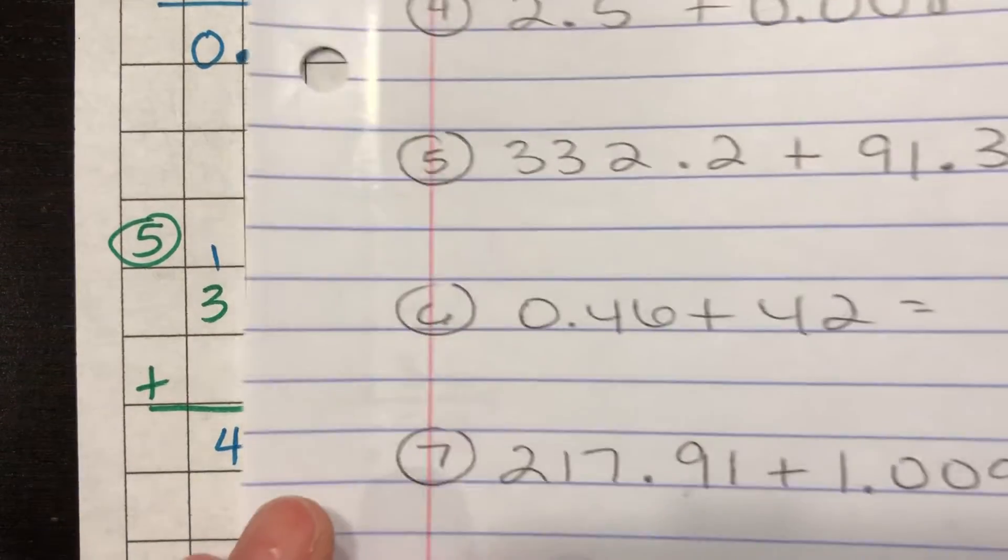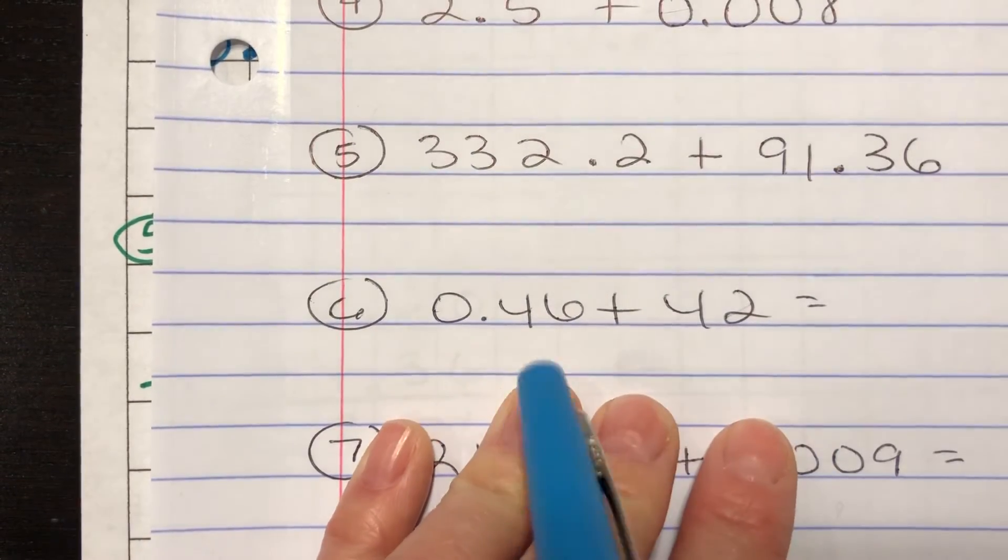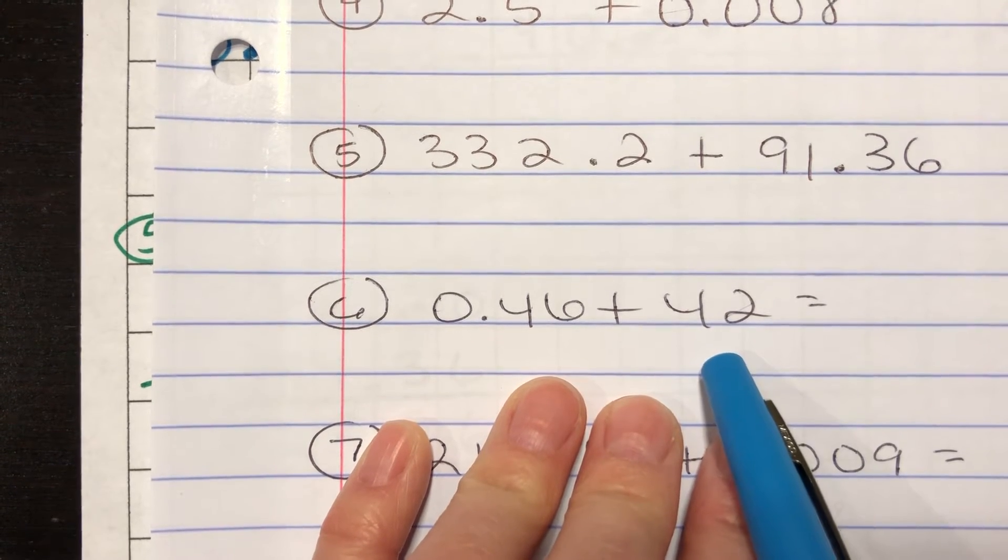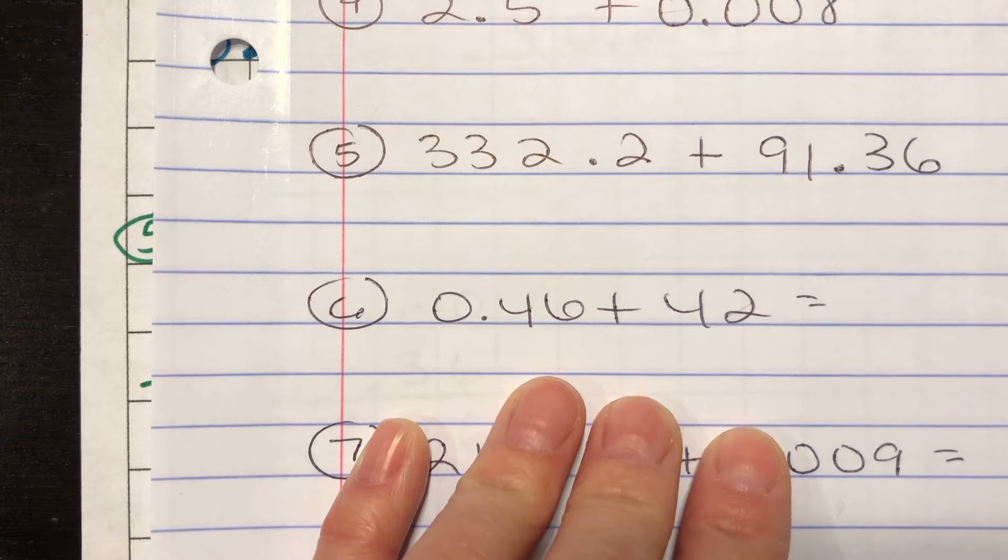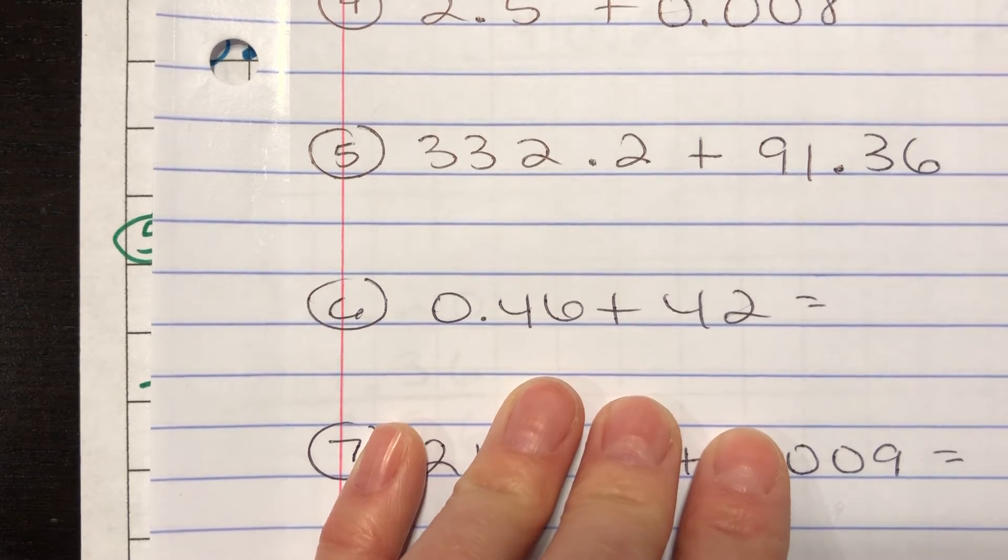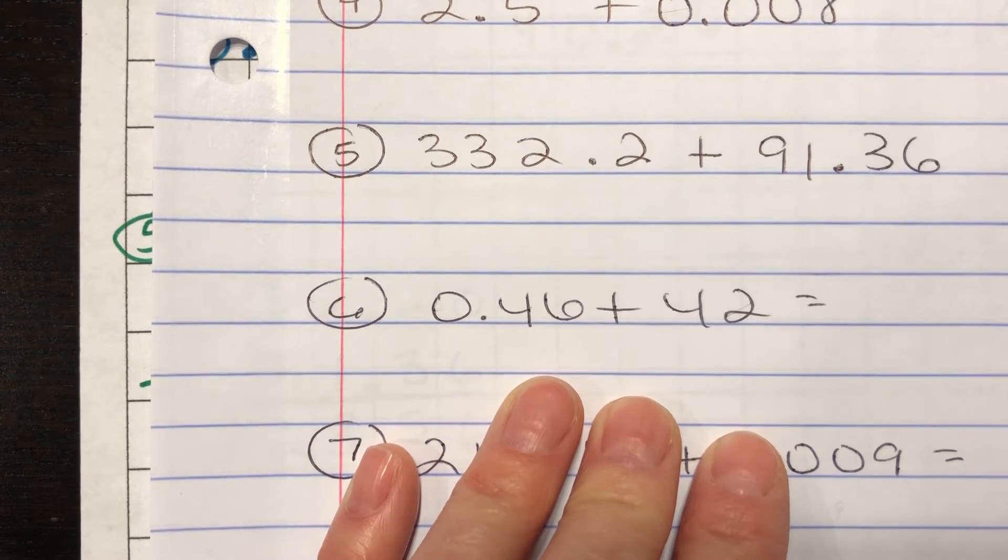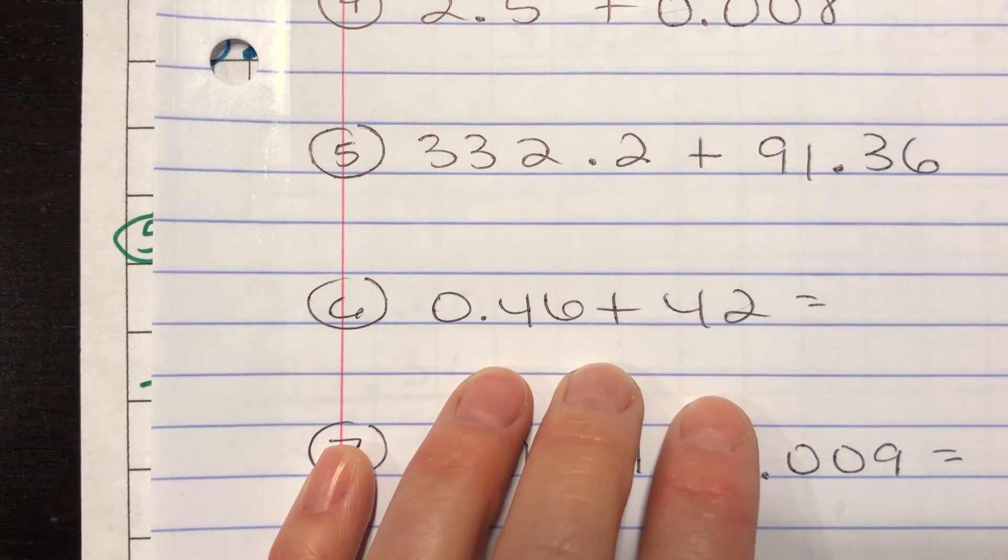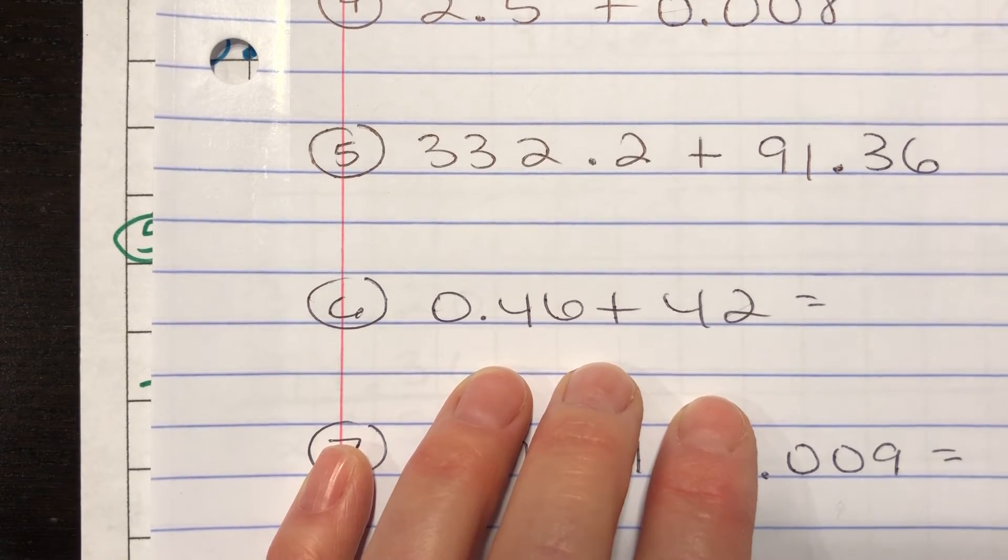Alright. We're getting close. Number six. Forty six hundredths plus forty two. This again is one of those that you could just look at and boom, we know the answer. And if you don't look at this and go boom, I know the answer, there's nothing wrong. It's okay. Once we line this up and I show you, you'll be like, oh, okay. I totally get it. So set this up on your paper or just write your answer on your whiteboard and get ready to check.